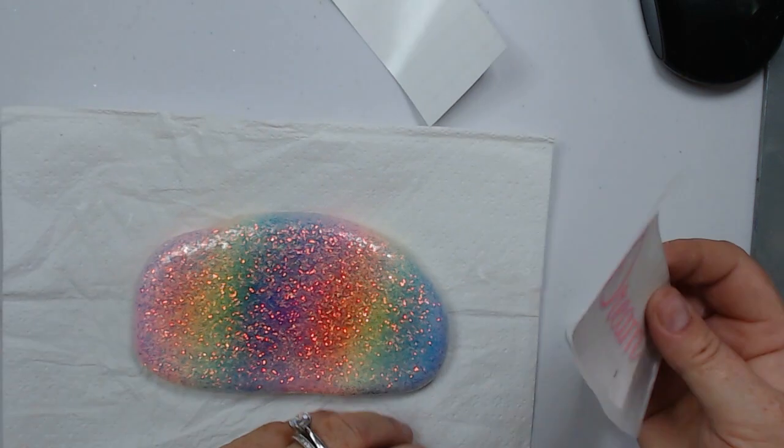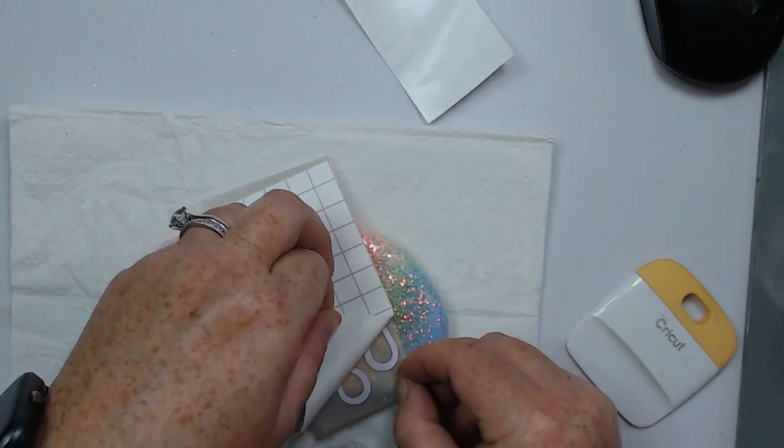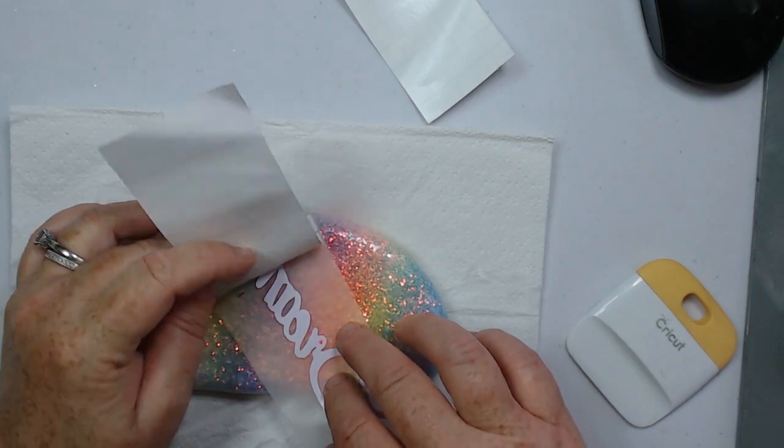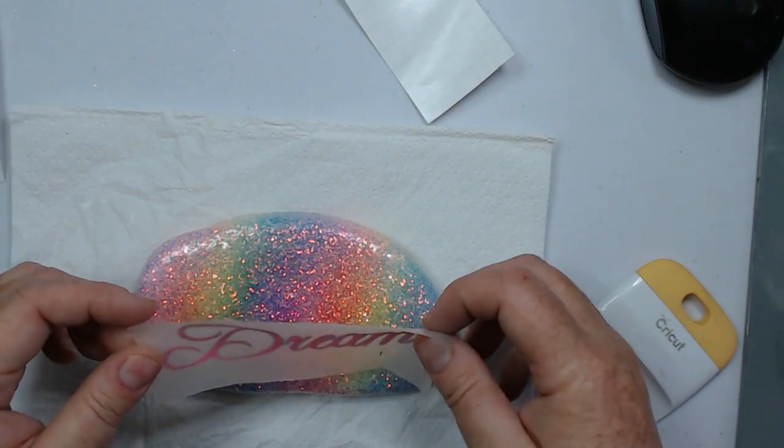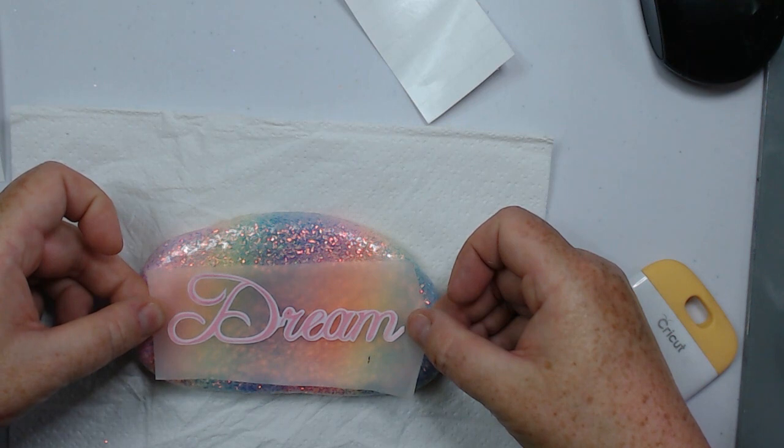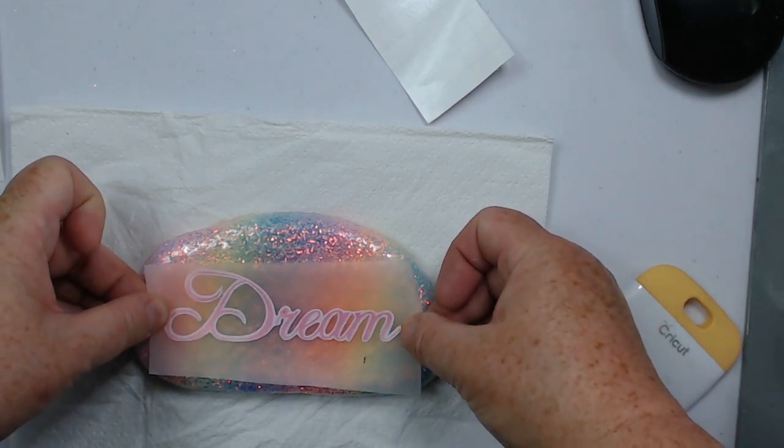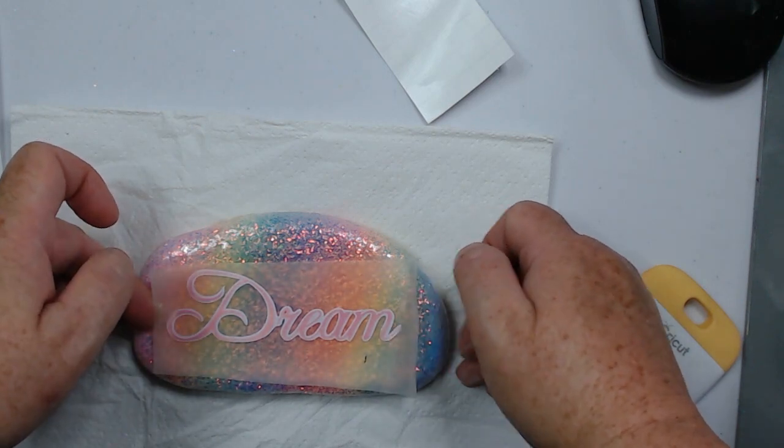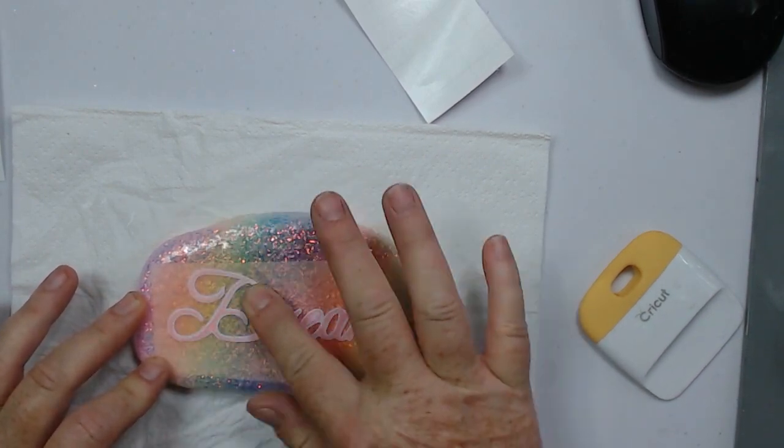So now that I have that all layered correctly, I'm going to go ahead and put it on my rock, which again has been sprayed with the triple thick clear coat from Rustoleum. Just try to get this on as straight as I can and centered as much as possible. And once you get it on there, just press it down really good and peel up the transfer tape.